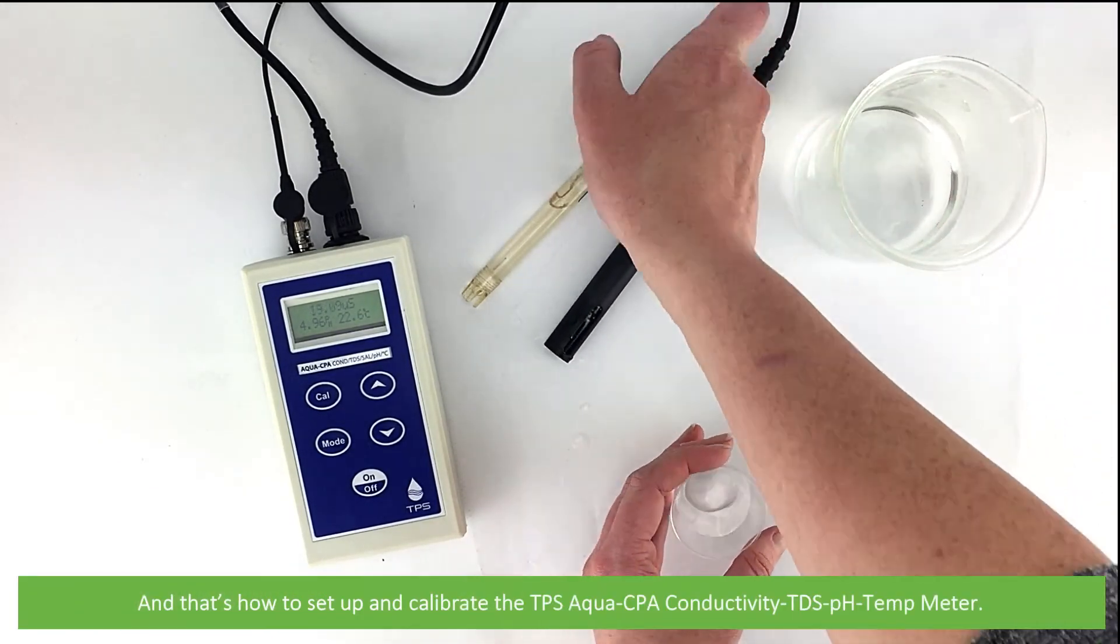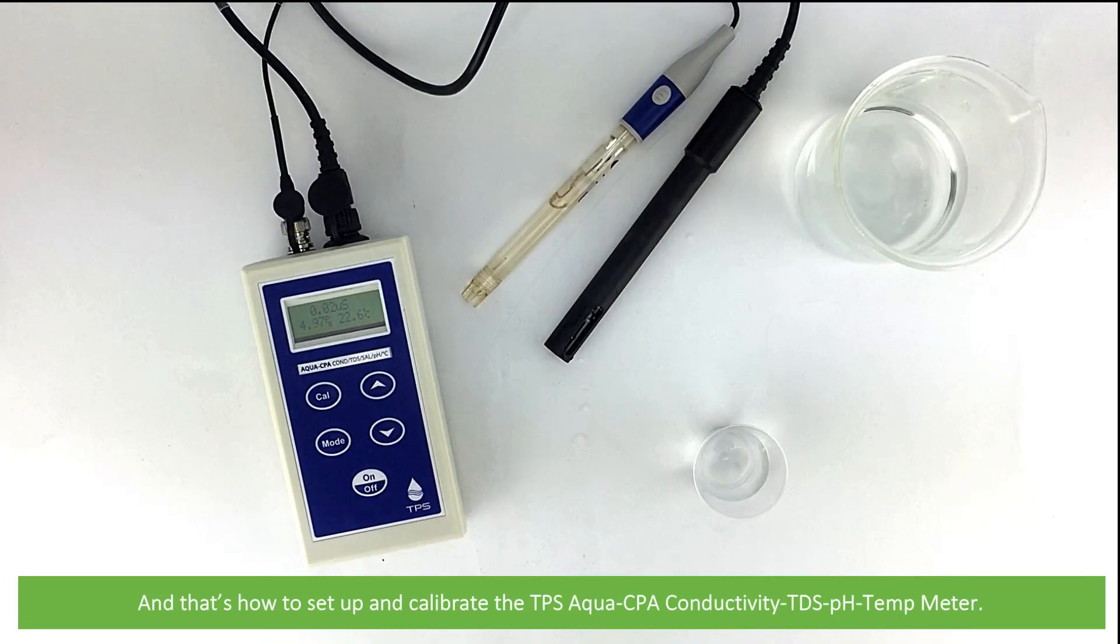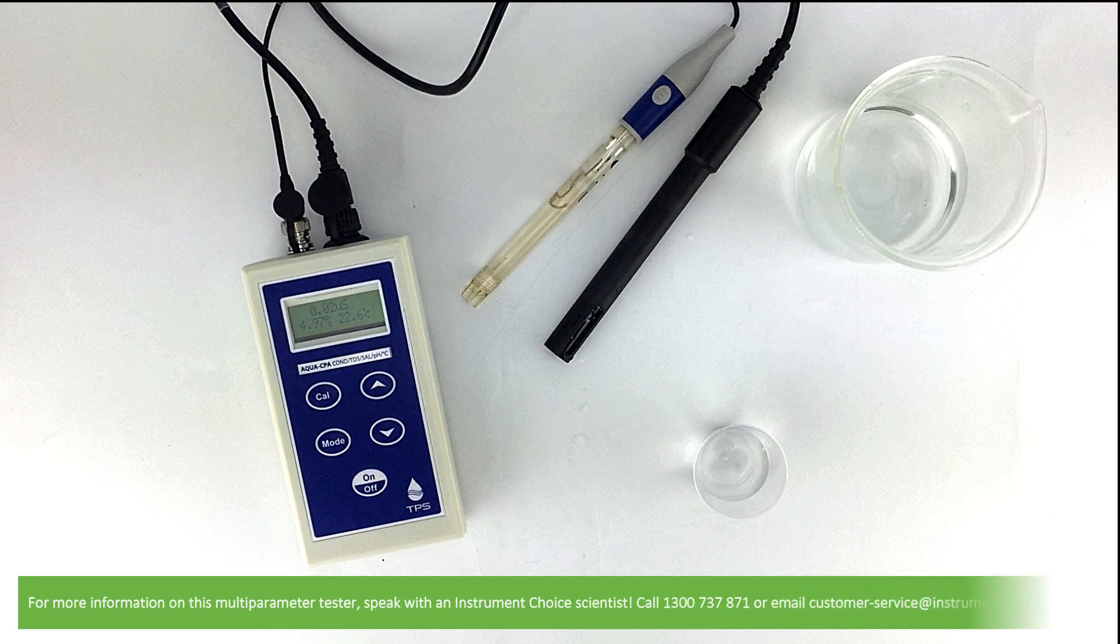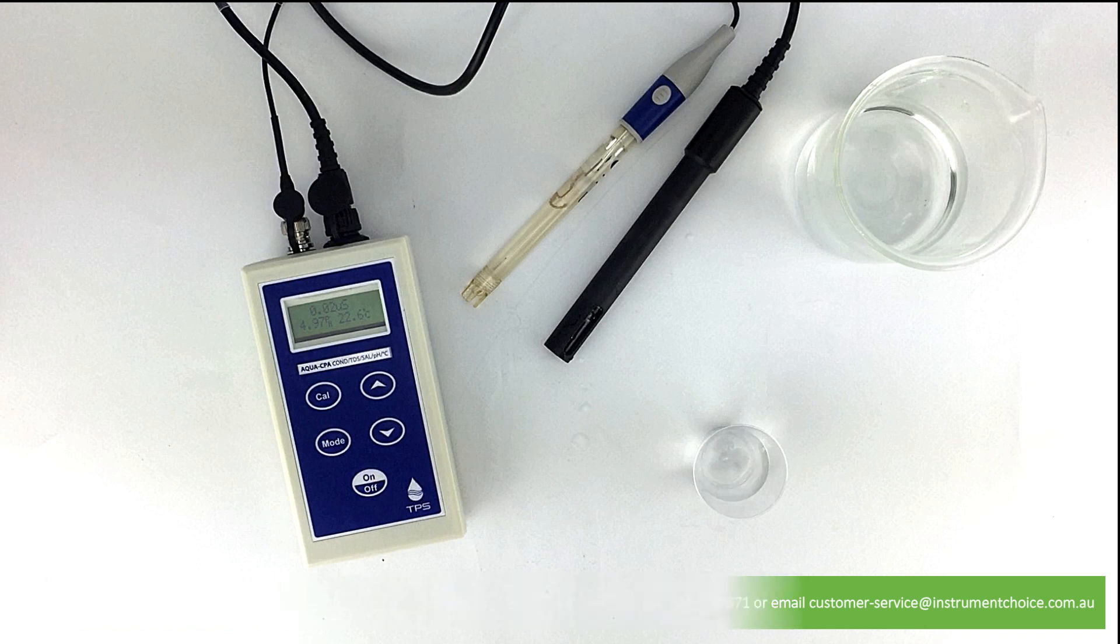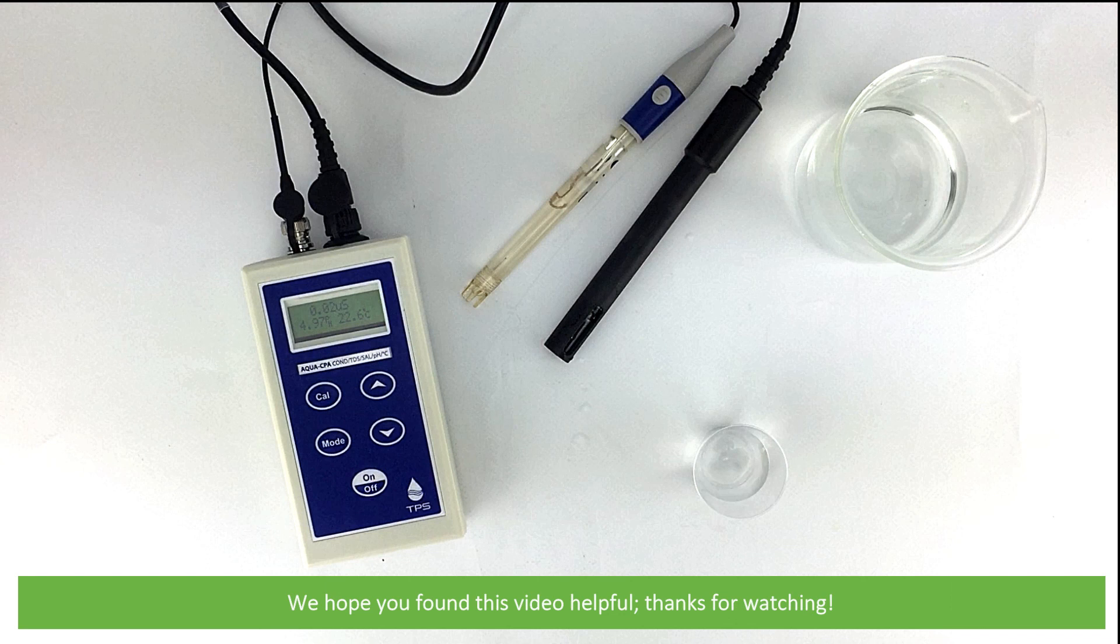And that's how to set up and calibrate the TPS Aqua CPA, conductivity, TDS, pH and temperature meter. For more information on this multi-parameter meter, speak with an Instrument Choice scientist. Call 1300 737 871 or email customer-service at instrumentchoice.com.au. We hope that you found this video helpful. Thanks for watching.